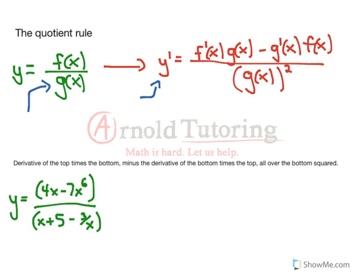Just like the product rule, when you look at it in terms of f's and g's, it can get kind of confusing and it's harder to memorize. I like to memorize the wording, so I've written it right down here. It says, the quotient rule is the derivative of the top times the bottom minus the derivative of the bottom times the top all over the bottom squared. That should make a lot more sense.